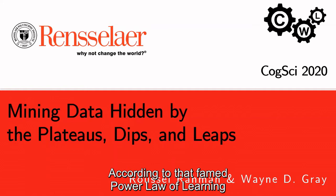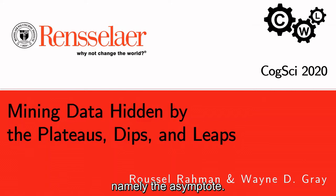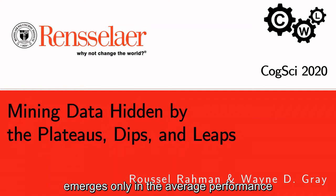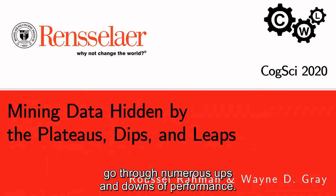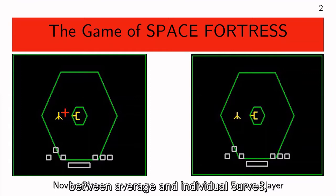According to the famed power law of learning by Alan Newell and Paul Rosenblum, the individual human should monotonically and continuously improve with practice until reaching the limit of performance — namely the asymptote. However, several works showed that the power law relationship emerges only in the average performance of a group of individuals, while the individuals themselves go through numerous ups and downs of performance.